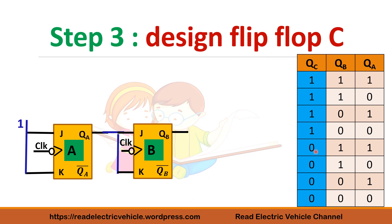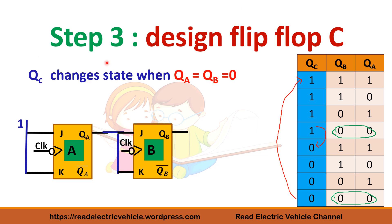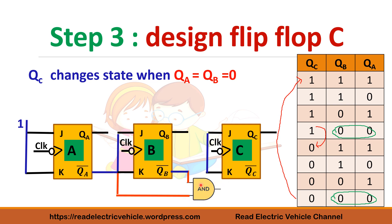Next we design flip-flop C. The QC output shows four ones then four zeros. It changes state when both QA and QB are 0. Using the same logic, we take QA-bar and QB-bar and use them as inputs to the next flip-flop through an AND gate. When both inputs are 1, the AND gate gives a high output, toggling flip-flop C. This completes the design of the 3-bit synchronous down counter.